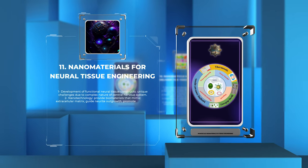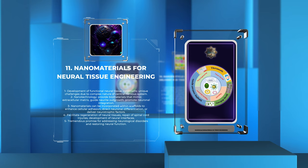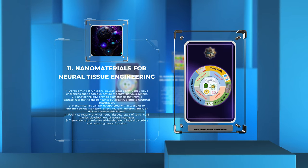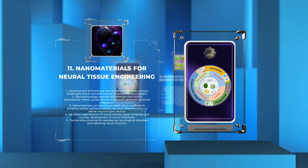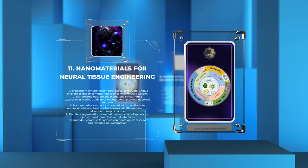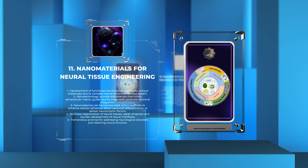The development of functional neural tissue constructs presents unique challenges due to the complex nature of the central nervous system. Nanotechnology offers innovative solutions for neural tissue engineering by providing biomaterials that can mimic the extracellular matrix of neural tissues, guide neurite outgrowth, and promote neuronal integration. Nanomaterials such as nanofibers, nanotubes, or nanoparticles can be incorporated within scaffolds to enhance cellular adhesion, direct neuronal differentiation, or deliver neurotrophic factors. These nanomaterial-based approaches facilitate the regeneration of neural tissues, the repair of spinal cord injuries, and the development of neural interfaces for brain-computer interfaces or prosthetics. With further advancements in nanomaterial synthesis and characterization, neural tissue engineering holds tremendous promise for addressing neurological disorders and restoring neural function.